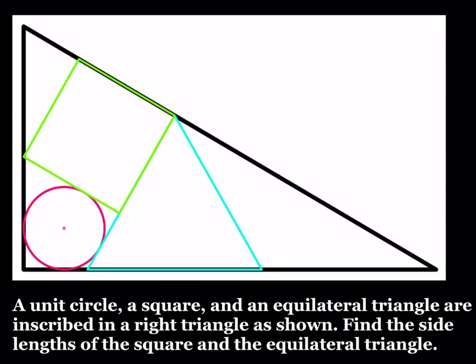Hello everyone. In this video we're going to be solving a Sangaku puzzle. According to Wikipedia, Sangaku puzzles are Japanese geometrical problems or theorems on wooden tablets which were placed as offerings at Shinto shrines or Buddhist temples. We have a unit circle, a square, and an equilateral triangle that are inscribed in a right triangle as shown. Find the side lengths of the square and the equilateral triangle. The only thing we know about this puzzle is that the radius of the circle is one, and using that information we're going to find the side lengths of the square and the equilateral triangle.